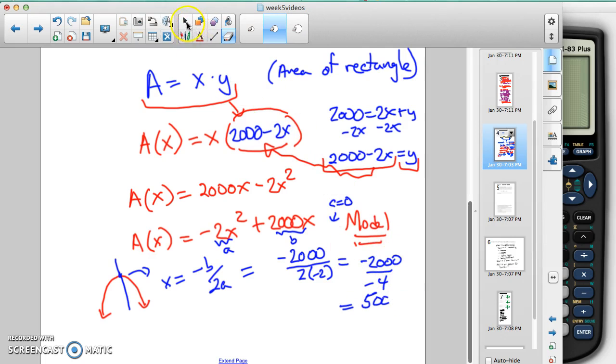So this is going to be my x value that's found in this function that gives me the maximum value. It gives me the highest point on that graph. So 500 is going to be, or 500, 500 is going to be x.